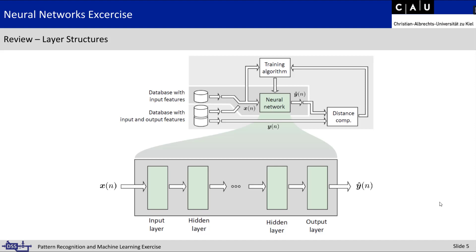Now in more detail: our input feature x of n is a database vector of input features. For speech this could be the pitch frequency; for images it could be RGB values. Those input features get processed in our neural network. We can divide the neural network into three basic layers: the input layer, hidden layers, and the output layer.